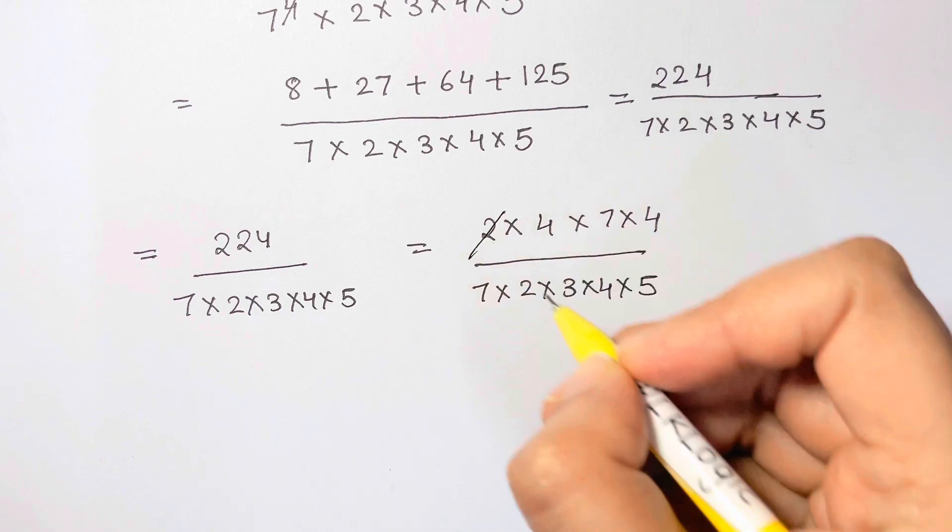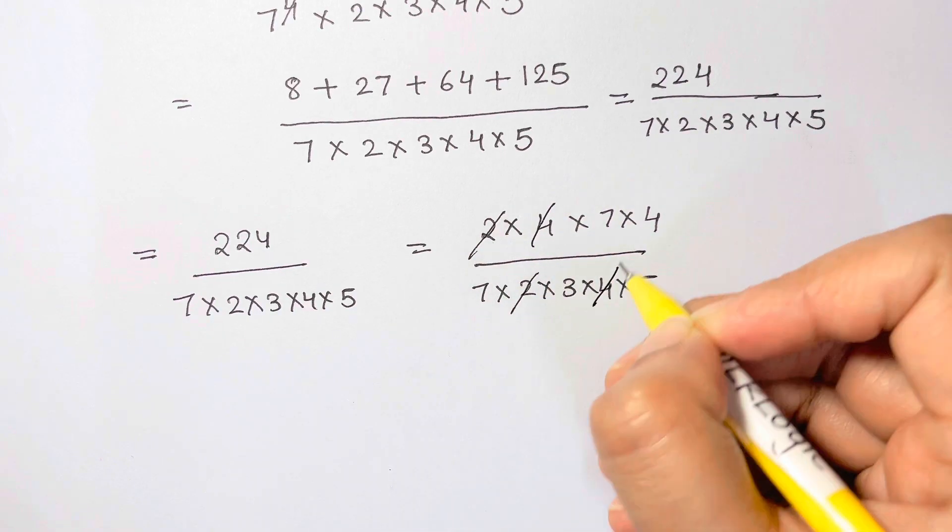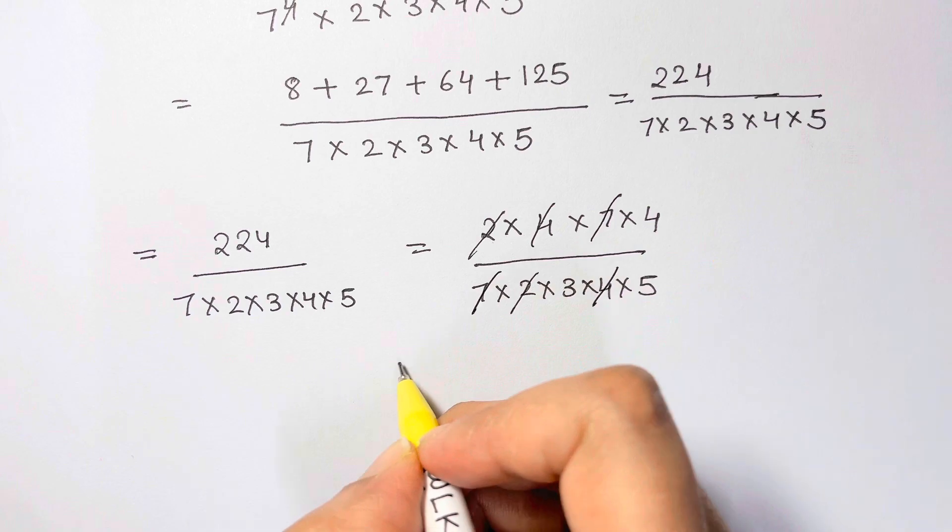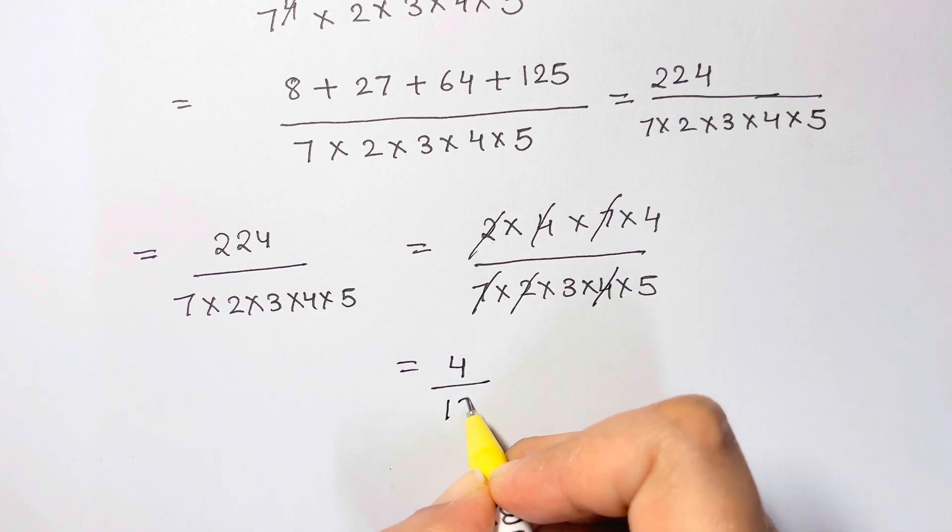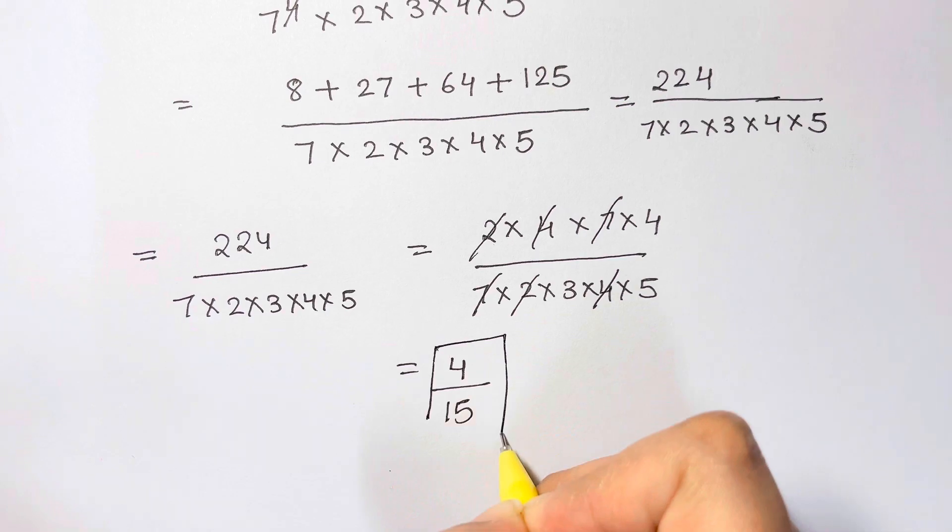Now, I can cancel out 2 with 2, 4 with 4, 7 with 7. So I'm left with 4 over 3 times 5 is 15. And that is our answer.